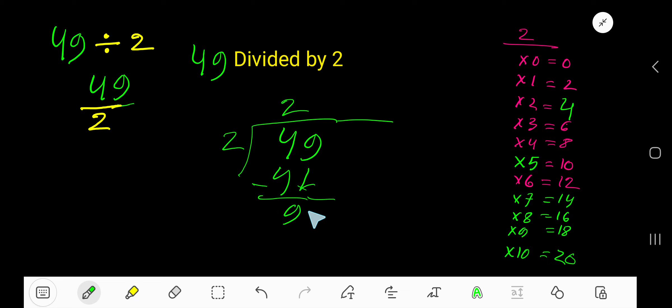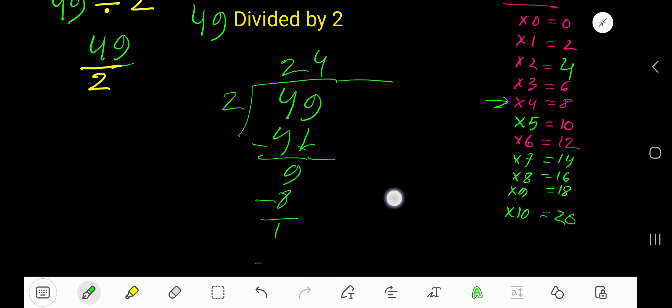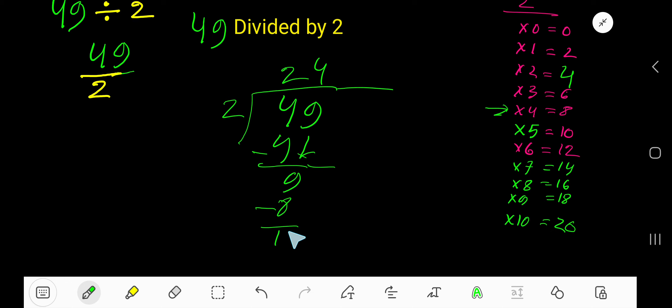2 goes into 9 how many times? Look, 5 times 10—which is better? So 4 times. 4 times 2 is 8. Subtract, you're getting 1. So your answer is 24 remainder 1.